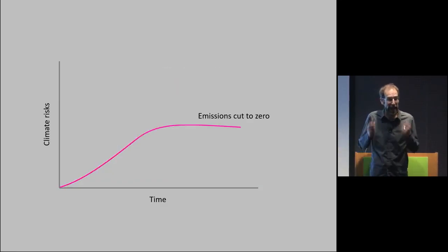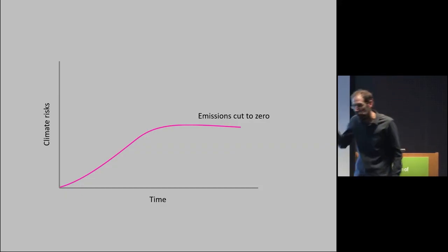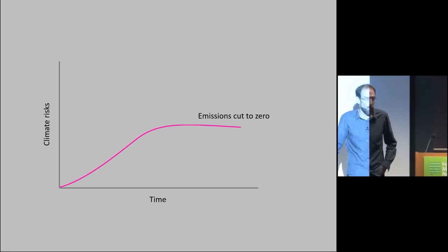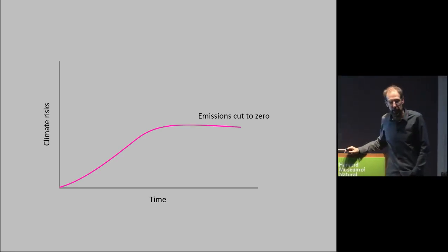And on that day, we have not solved the climate problem. We've just stopped it getting worse, because climate is a stock and flow problem. Climate depends on the cumulative emissions of CO2. So when you bring emissions to zero, you don't make the problem go away. You just stop the problem incrementally getting worse.